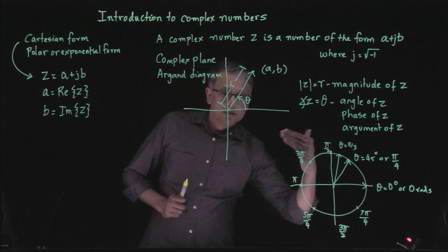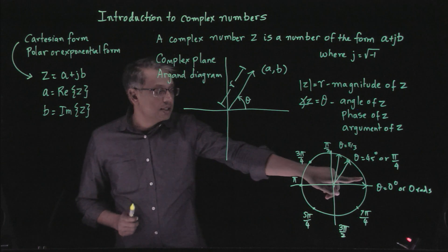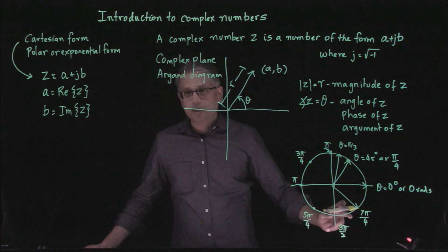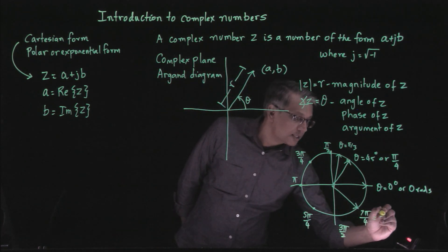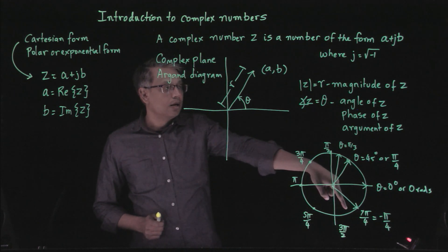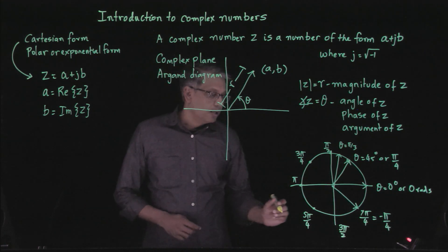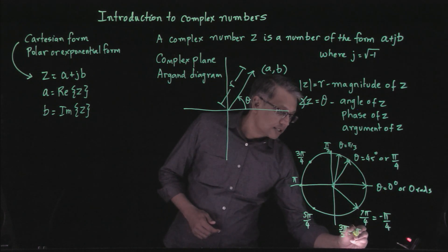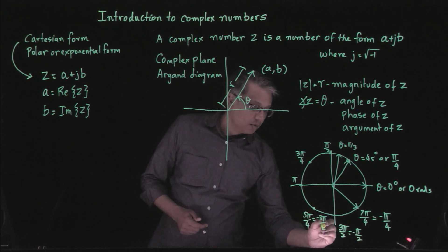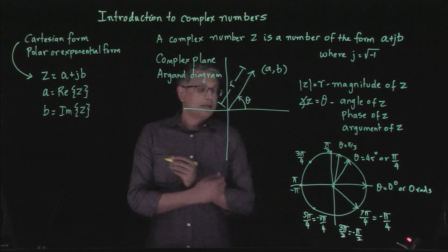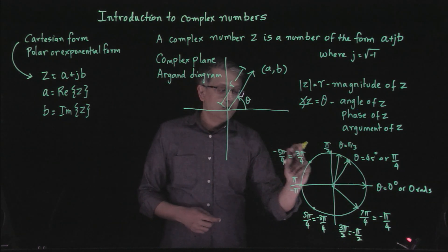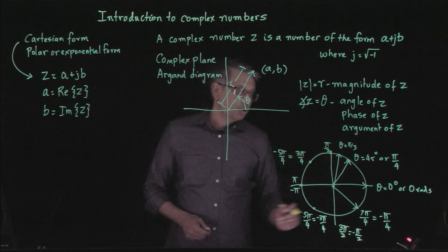Angles were measured going counterclockwise. If we measure clockwise instead, those are negative angles. For example, a vector at 7 pi over 4 can also be described as negative pi over 4. Similarly, 3 pi over 2 is the same as negative pi over 2, 5 pi over 4 is negative 3 pi over 4, and pi is the same as negative pi.